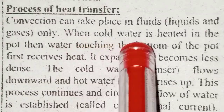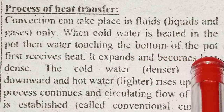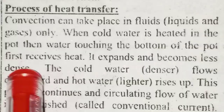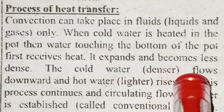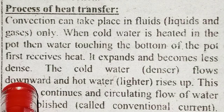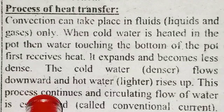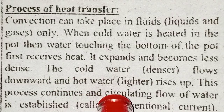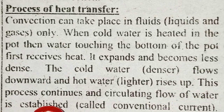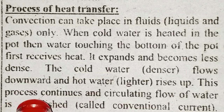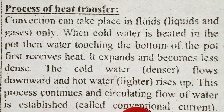When cold water is heated in a pot, the water at the bottom gains heat, expands, and becomes less dense. The hot water rises up while cool water flows downward. This process continues, establishing a continuous circulating flow of water called a convection current.